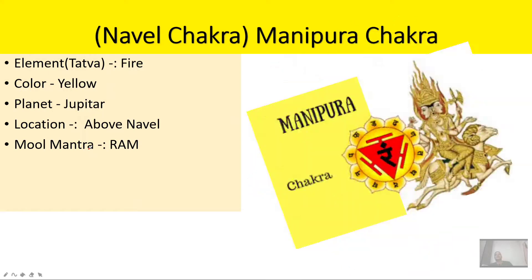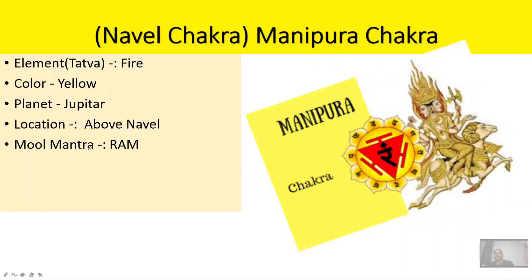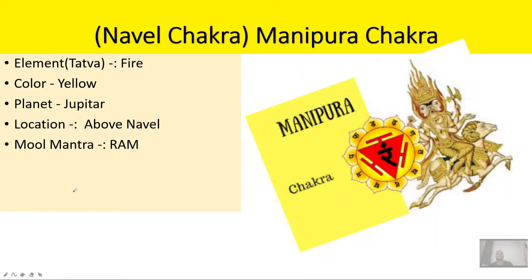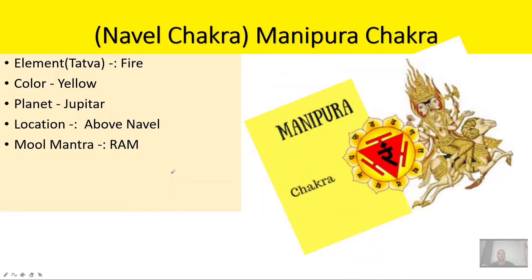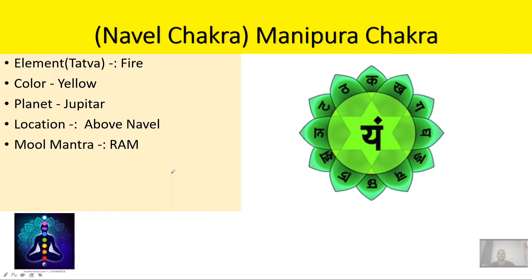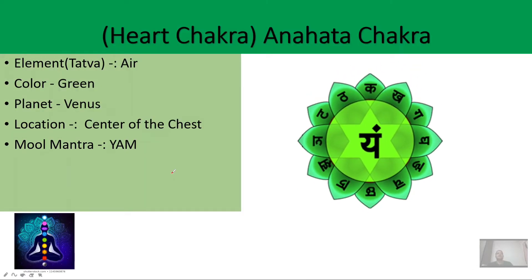The third chakra is the Manipura chakra, or the navel chakra. It is related to your digestion system. The main element of this chakra is fire, because fire is required to digest your food. The color associated with this chakra is yellow, the planet is Jupiter, the location is above the navel, and the mula mantra is 'Ram' — you can chant it like 'Ram.'